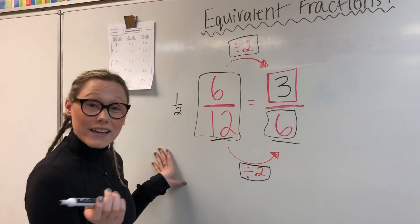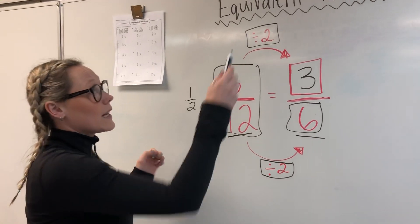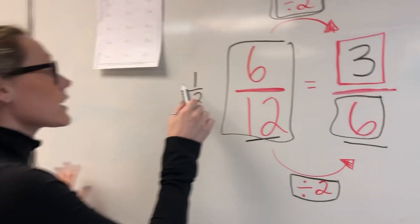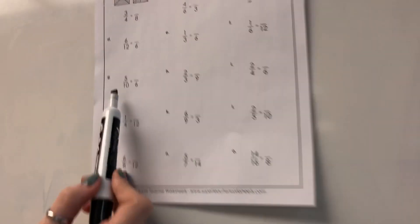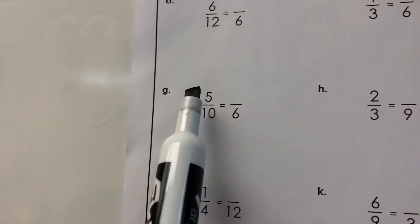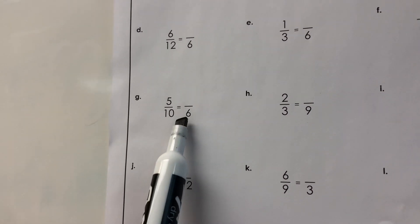So G and I are going to be difficult. Maybe not difficult, but this won't help you with G and I. If you look at the fraction, you should notice right away that 5 is half of 10.